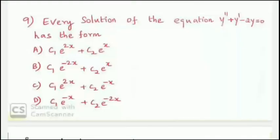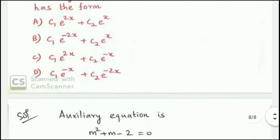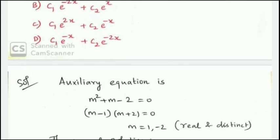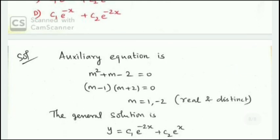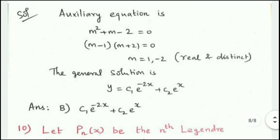Next question: every solution of y'' + y' - 2y = 0 has the form given by the complementary function. The auxiliary equation is m² + m - 2 = 0, which factors as (m - 1)(m + 2) = 0, giving roots m = 1 and m = -2. The roots are real and distinct, so the solution is y = c₁e^(-2x) + c₂e^x. Option B: the answer is c₁e^(-2x) + c₂e^x.